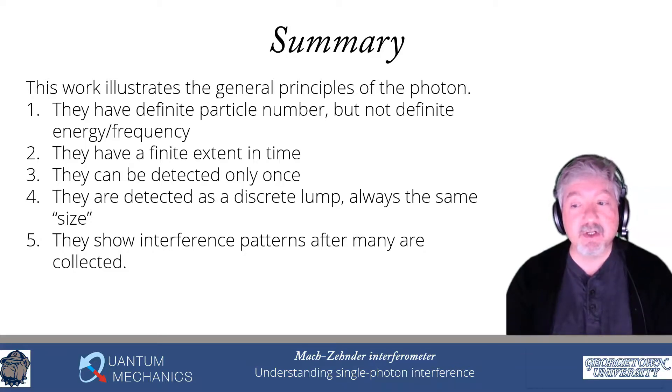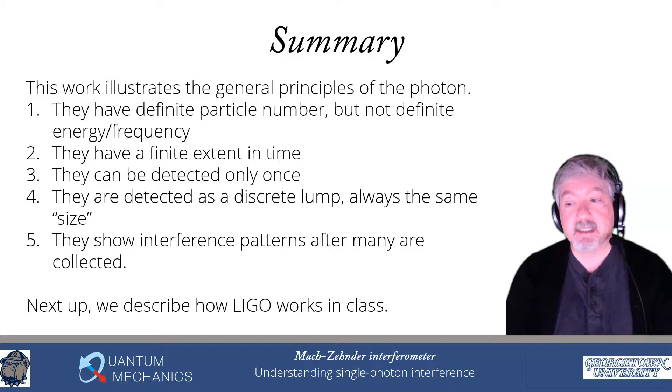They show interference patterns after many of them are collected, so that shows that single photon interference actually occurs. Precisely how it occurs, we still don't really have a great explanation about exactly how that happens, but it automatically comes out of our theory because we're working with probability amplitudes. Next up, we're going to describe how LIGO works in class. That's going to be the last thing that we have done.